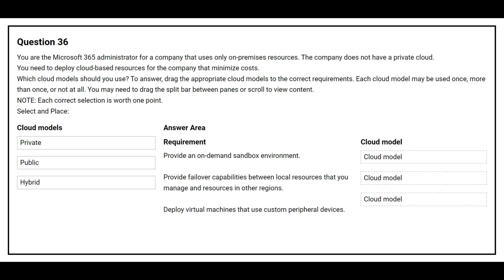Question number 36. You are the Microsoft 365 administrator for a company that uses only on-premises resources. The company does not have a private cloud. You need to deploy cloud-based resources for the company that minimize cost. Which cloud model should you use? On the left side you have the cloud models, on the right side you have the requirement, and you need to choose the correct cloud model.